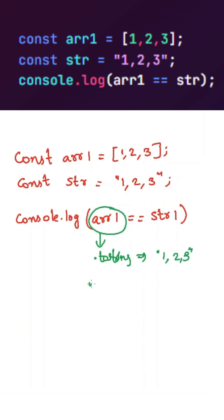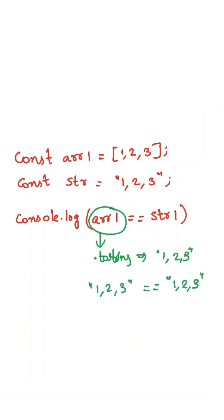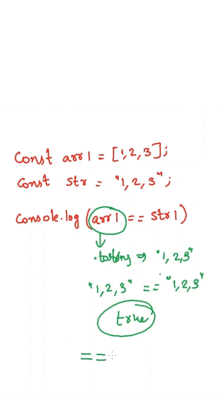Now our expression will become string 1, 2, 3 double equal to string 1, 2, 3. As these both are equal, it will return true to us. To avoid all these issues, you need to use the Strict Equality Operator.